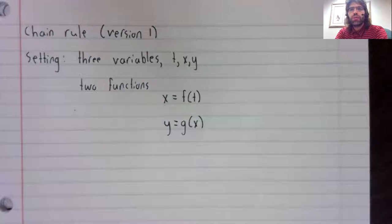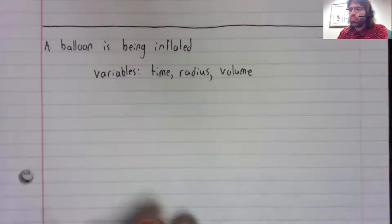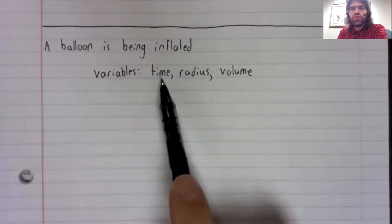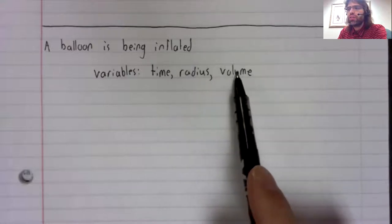Before we proceed any further, let's give a concrete example. Say that a spherical balloon is being inflated and you're keeping track of three variables: the time you've spent inflating the balloon, the radius of the balloon, and the volume of the balloon.